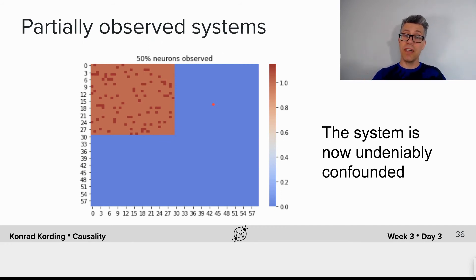They're still producing activity and importantly each of these neurons, like in the previous examples, can now affect multiple neurons in the pool of neurons that we have observed.